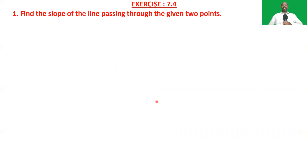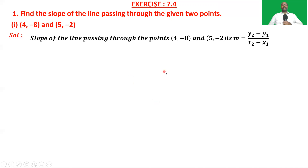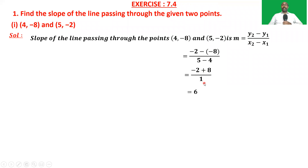The first problem: find the slope of the line passing through the points (4, -8) and (5, -2). Using the formula, slope m = (y2 - y1)/(x2 - x1), where x1 = 4, y1 = -8 and x2 = 5, y2 = -2. Substituting: m = (-2 - (-8))/(5 - 4) = (-2 + 8)/1 = 6/1 = 6. So the slope of the line passing through (4, -8) and (5, -2) is 6.